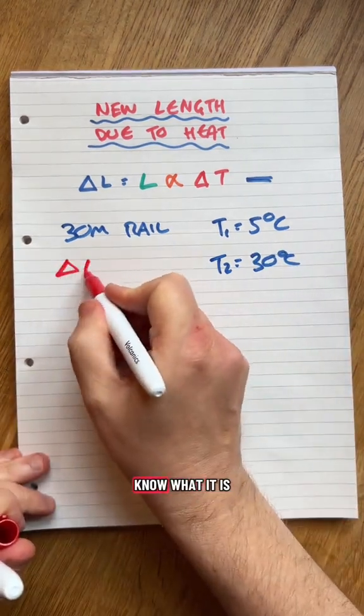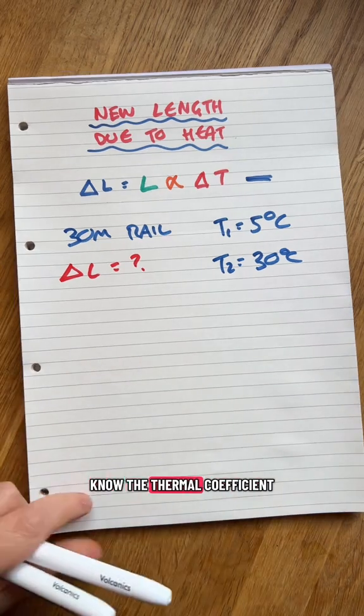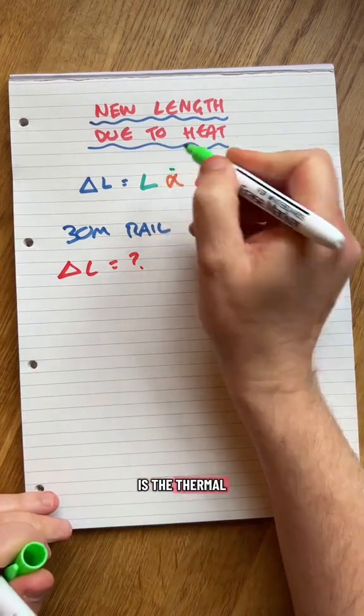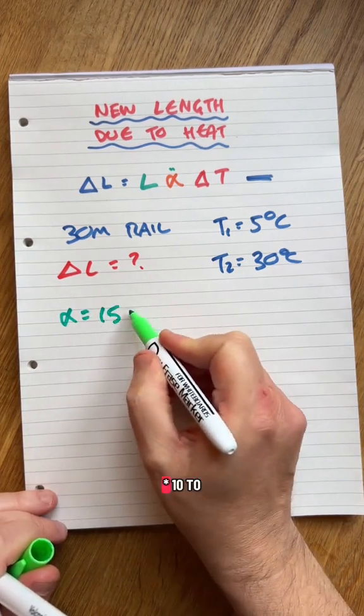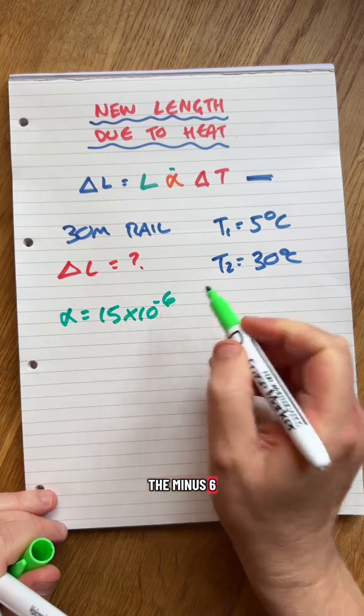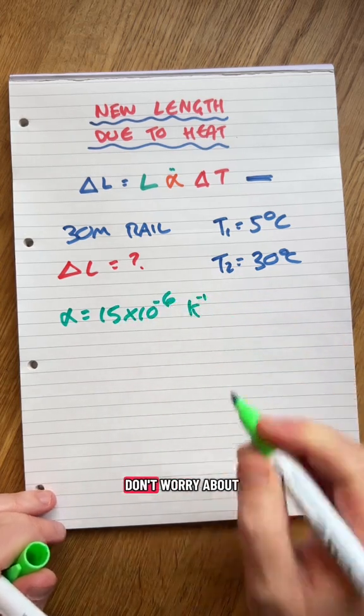We need to actually find the change in length. I don't know what it is. We need to know the thermal coefficient. This thing here is the thermal coefficient of expansion. The one for steel is 15 times 10 to the minus 6 per degree Kelvin. Don't worry about the units.